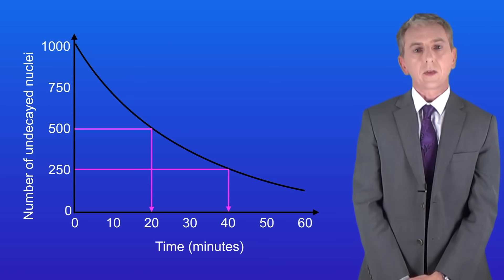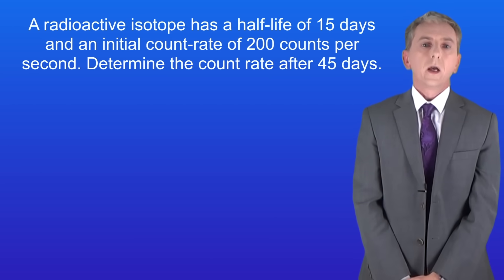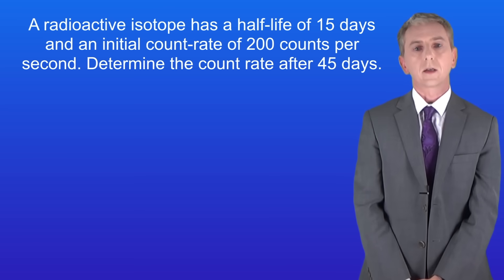Now you could also be asked to calculate the decrease in count rate after a given number of half-lives. Here's a typical question. A radioactive isotope has a half-life of 15 days and an initial count rate of 200 counts per second. Determine the count rate after 45 days.